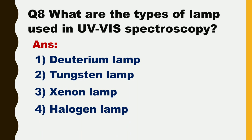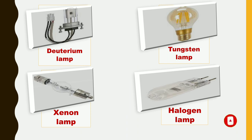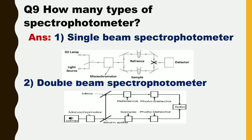Next question is: what are the types of lamps used in UV visible spectroscopy? The following types of lamps are used in UV visible spectroscopy. These are: deuterium lamp, tungsten lamp, xenon lamp, and halogen lamp.